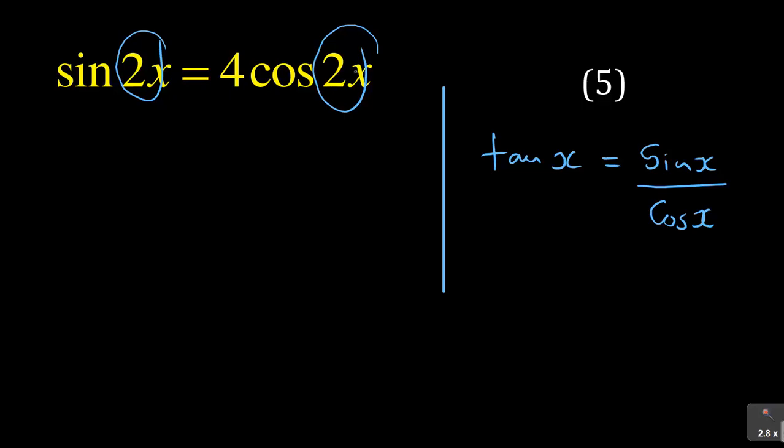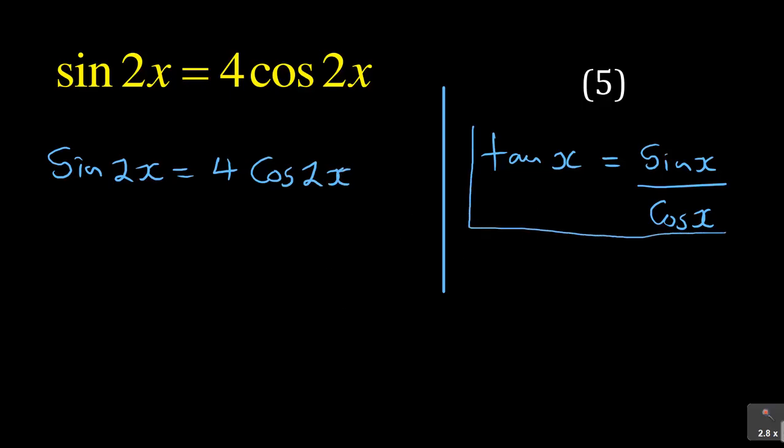Your x in this case is the 2x part. So which means if you have to use that same concept, I have here sin 2x is equal to 4 cos 2x. Now, if I'm going to use this identity here, why am I using it? As I say, because I've got the same angles, then I have to go through tan.